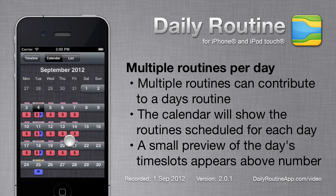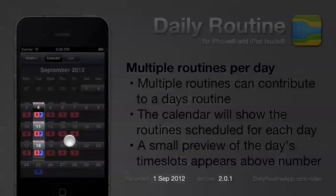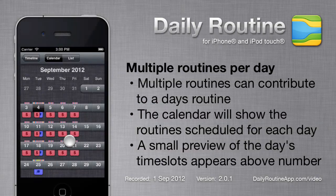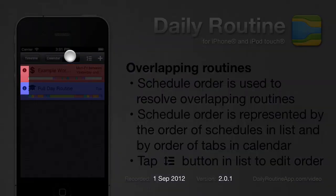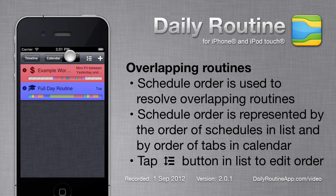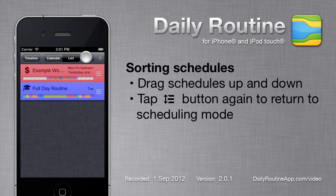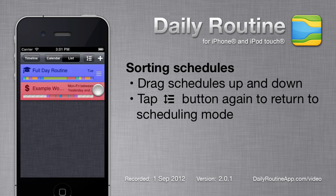As of Daily Routine version 2, multiple routines can be scheduled for the same day. In cases where routines overlap, Daily Routine uses Schedule Order to determine which routine to use during the overlap. We can manage schedule order by tapping the sort button in the list. The schedules shift over a little, then we can drag them up or down. Tap the sort button again to return to scheduling mode.